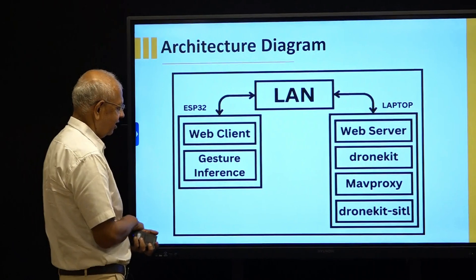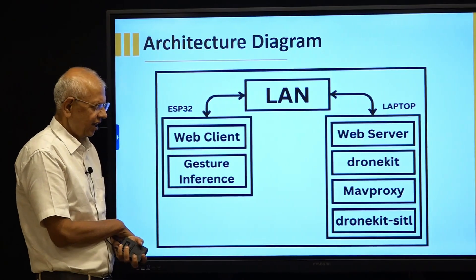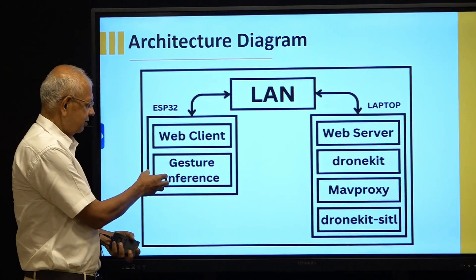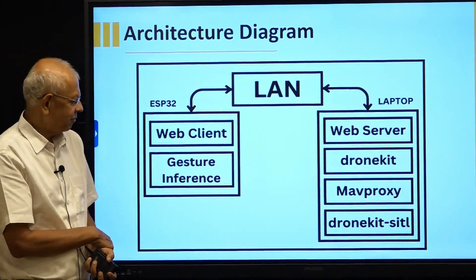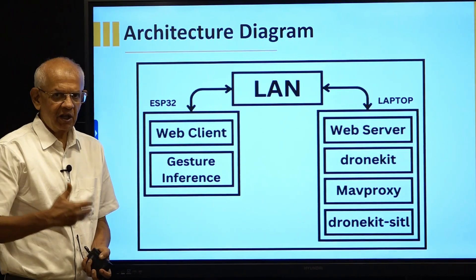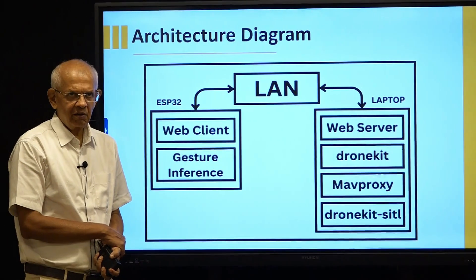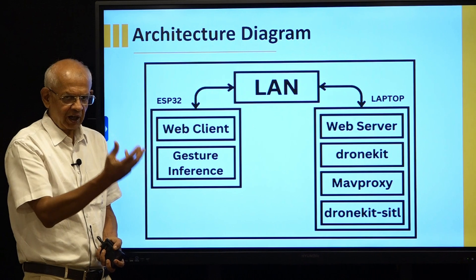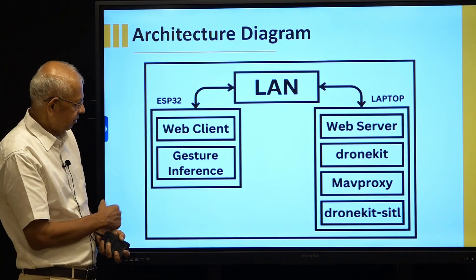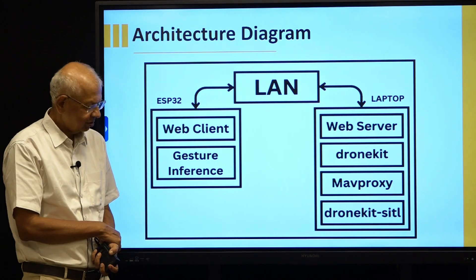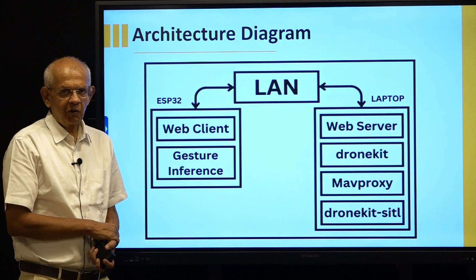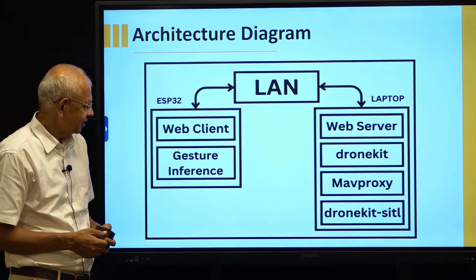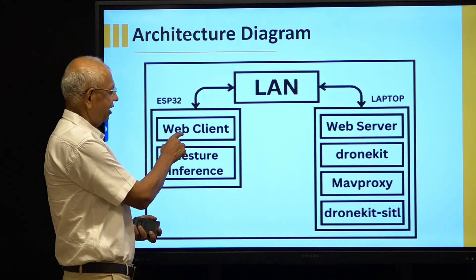Our architecture is largely like this, which I alluded to in the earlier session. On the ESP32 side, we have the recognition of the gesture in conjunction with the IMU 6050, which is going to record the readings. Then based on the ML model downloaded from Edge Impulse, I am going to do the inference. Once I recognize the gesture — whether it is left, right, top, bottom, or whatever — I am going to use the WebSocket client on the ESP32.